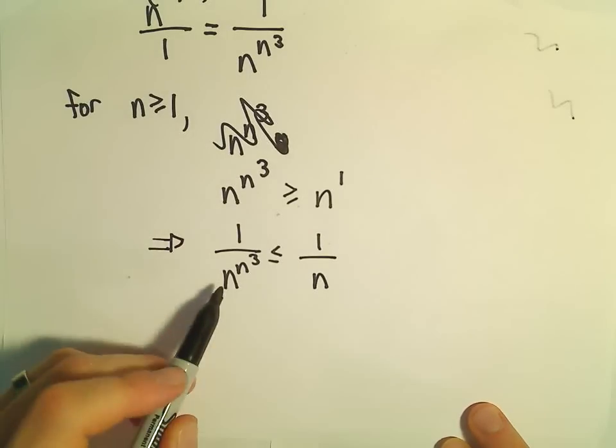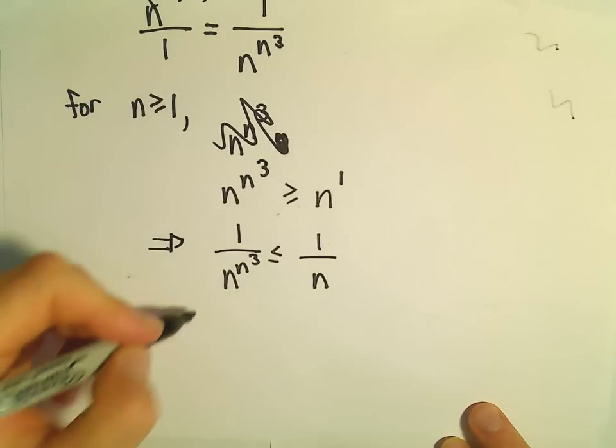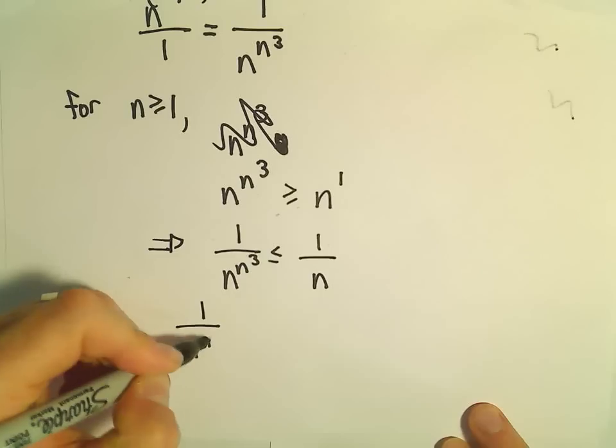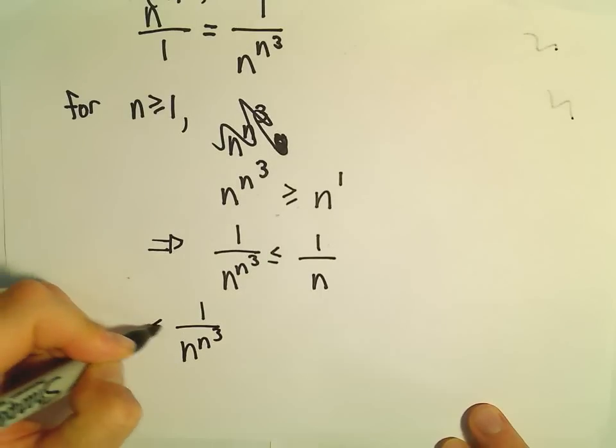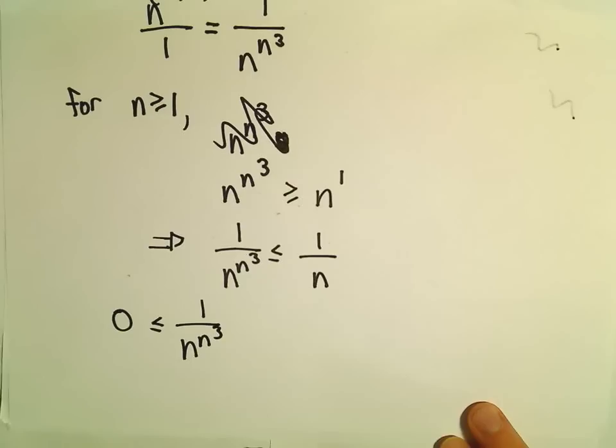Well, since we're using positive numbers, n is some positive number, so 1 over n raised to n to the third is always going to be greater than or equal to 0.